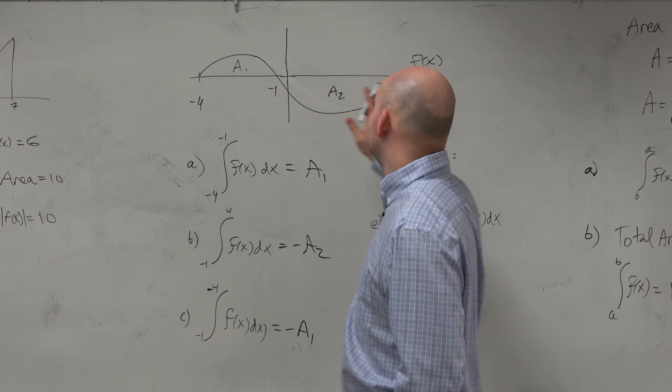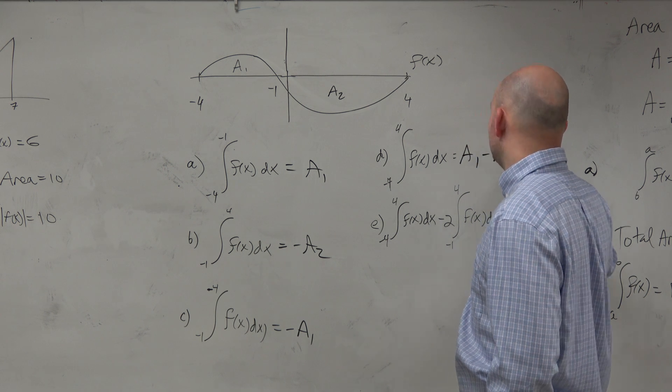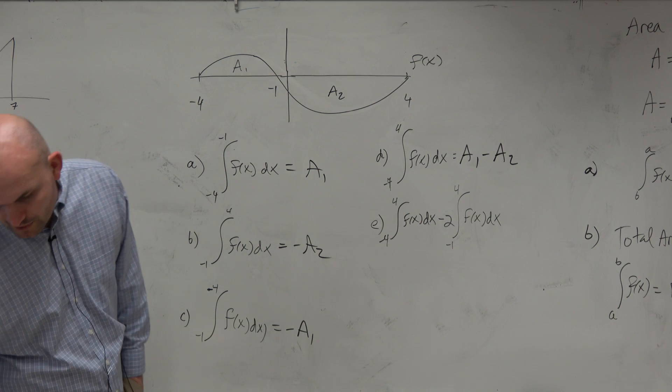And then we're going from negative 4 to 4. That's going to be our A1 minus A2. And then we get into this point.